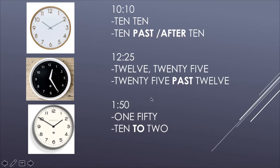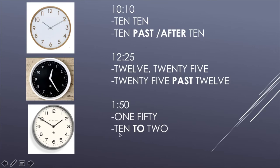Así cuando estamos antes de la media hora usamos "past" o "after". Después de la media hora vamos a utilizar la palabra "to" para decir la segunda forma. Veamos: el palito pequeño aún no llega al 2, para que ya sean las 2 tiene que estar el minutero en el 2 — aún no, así que son la 1. Los minutos: 5, 10, 15, 20, 25, 30, 35, 40, 45, 50 — son la 1:50. Podemos decir "one fifty" o la segunda forma: 10 para las 2 — faltan 10 minutos para las 2. "10 to 2" — el "to" significa "para".